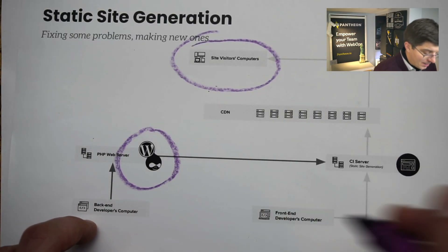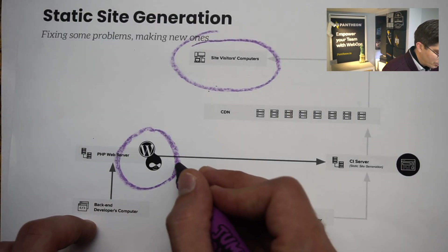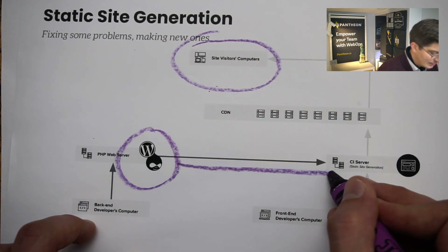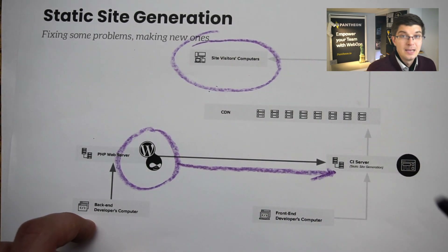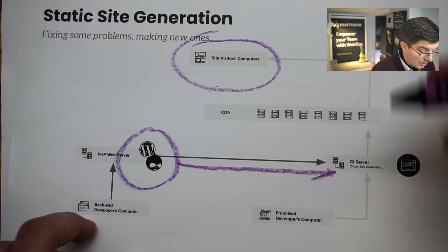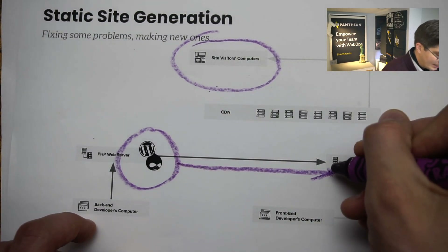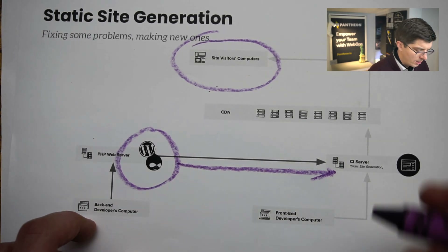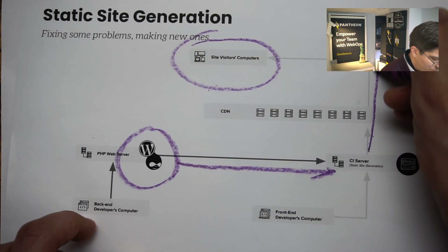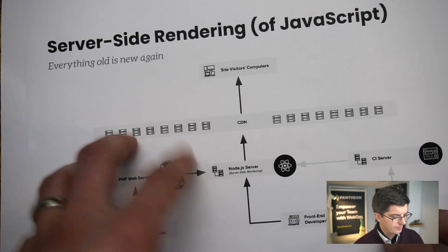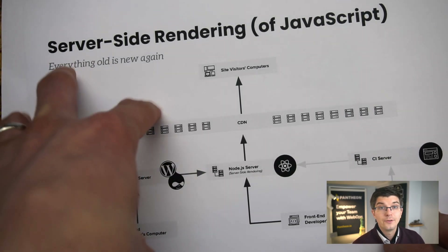Static site generators are bending over backwards trying to accommodate this process that, out of the box, can take many minutes. They're trying to make it take a single minute or a small number of seconds. But after a few years of watching this route play out, I can see why the front-end development framework zeitgeist is moving on — or moving backwards, perhaps — to server-side rendering.